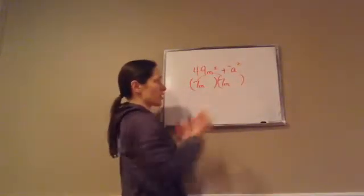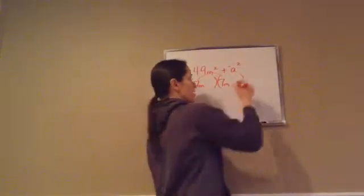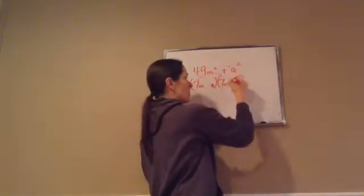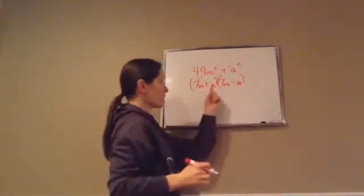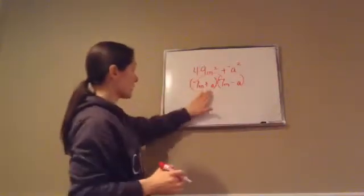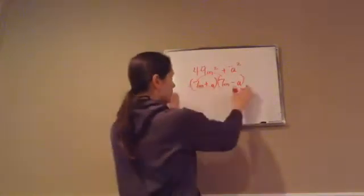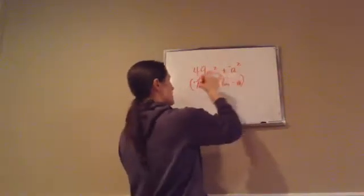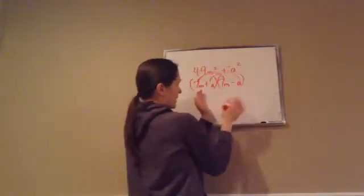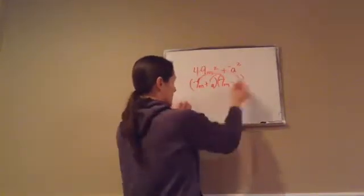The final answer is 7m plus a times 7m minus a. You can go and multiply it out: this times this, this times this — in that middle piece you get 1a plus negative 1a, which cancels out. So that is putting it in factored form.